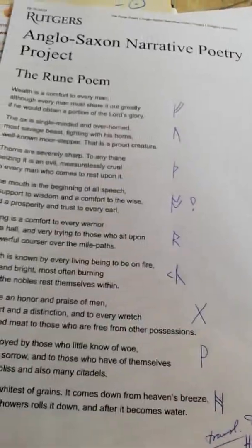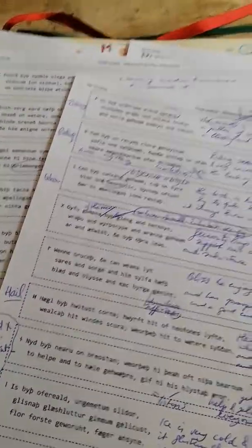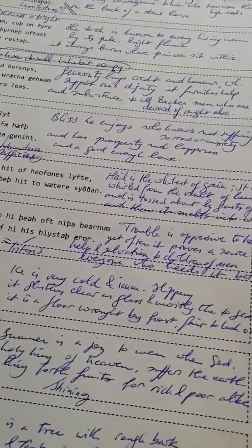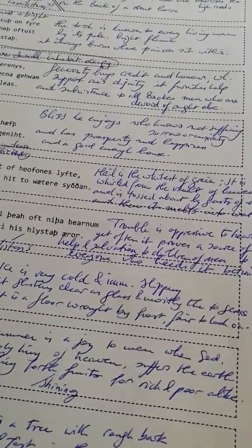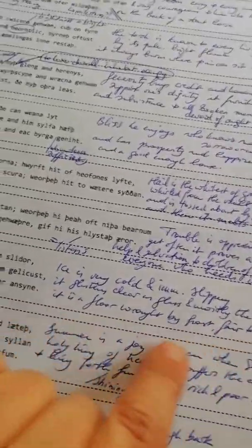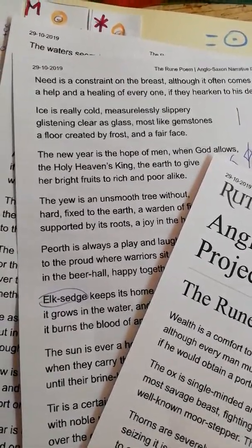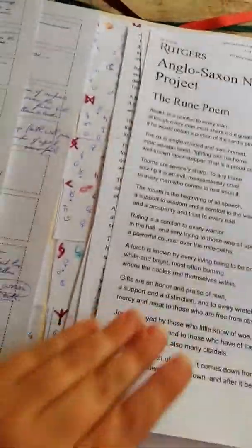Really fun guy. Sounds like a great teacher to have. Not anymore for me, I'm afraid. The old translation is over here. Ice is very cold and immeasurably slippery. It glistens clear as glass and mostly to gems. It is a floor wrought by frost. Fair to look on. So that's different. Fair to look on the floor. There's differences like that. I'm going back to Holstetter here to see, because he says, and a fair face. A floor created by frost and a fair face. So then, of course, I do have to absolutely go back to the original.